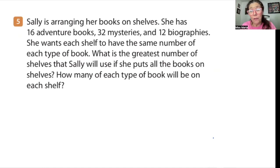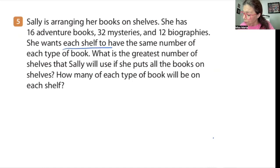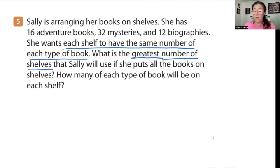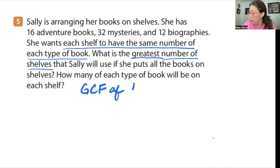Sally is arranging her books on a shelf. She has 16 adventure books, 32 mysteries, and 12 biographies. She wants each shelf to have the same number of each type of book — that lets us know each shelf is equal. What is the greatest number of shelves that Sally will use if she puts all the books on the shelves, and how many of each type of book will be on each shelf? So we are finding the GCF of 16, 32, and 12.